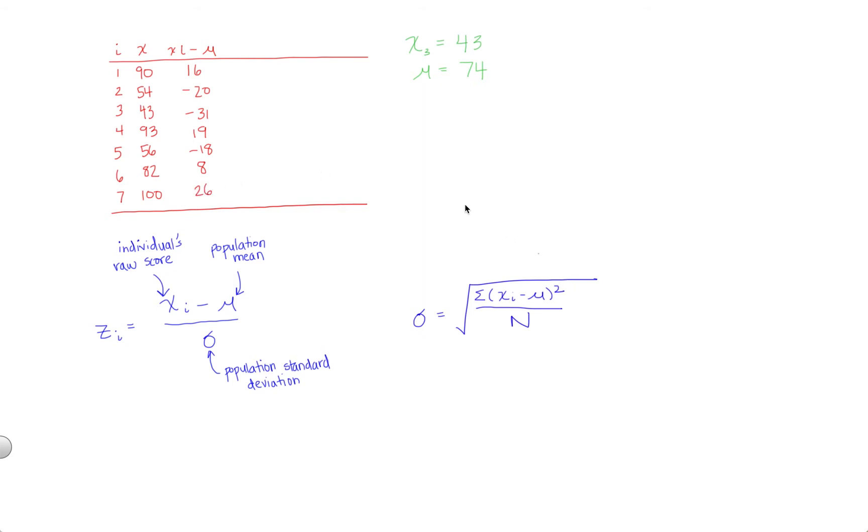Now we need to square these values in a new column, x sub i minus mu squared. 16 squared is 256, 20 squared is 400, and negative 31 squared equals 961.